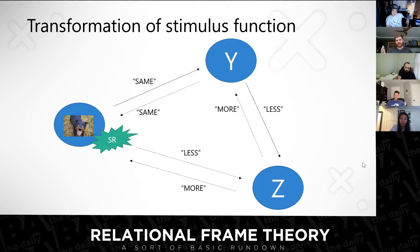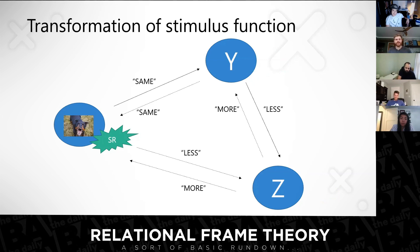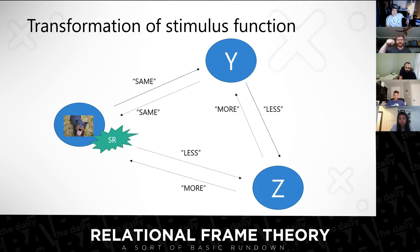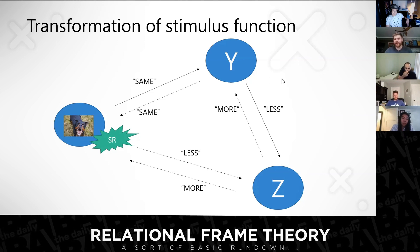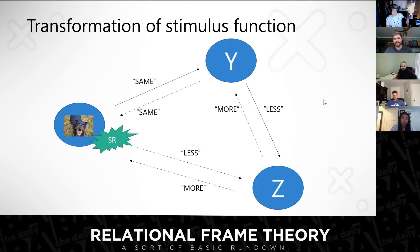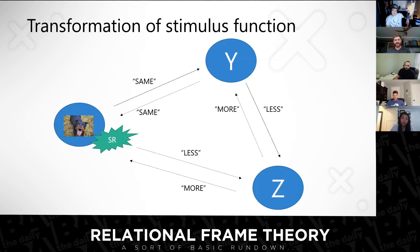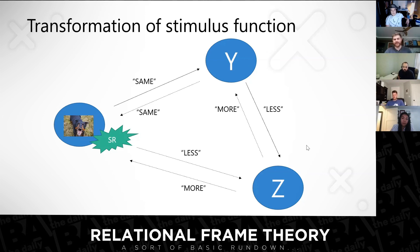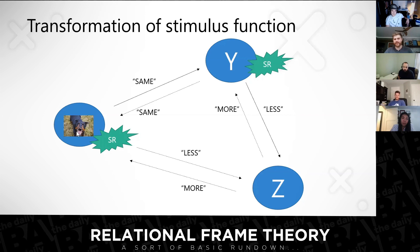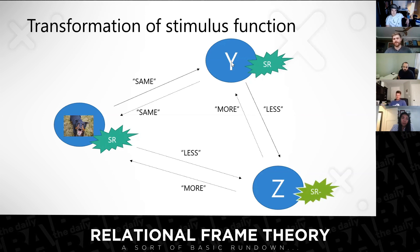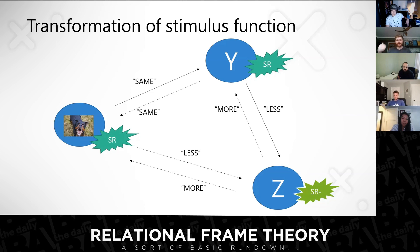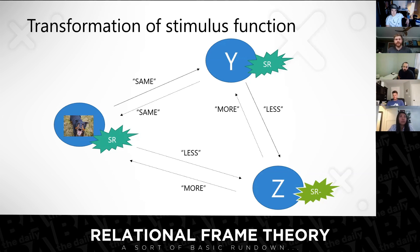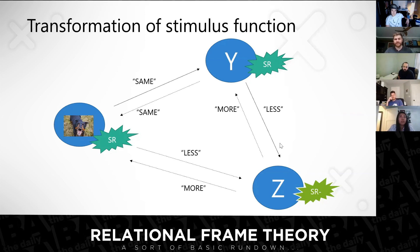We can also get a transformation of aversive or escape functions. Here's a big, loud, barking dog — his name is Henry. Y is the name Henry. If I tell you that Henry is less vicious than Frank, and we're going to my friend's house where Frank lives, now I'm freaking out. The aversive function of the dog transfers to the name Henry, and now I'm even more afraid of Frank because he's bigger and meaner than Henry. I don't actually have to ever meet Frank or be attacked by Frank — I know to avoid Frank because of this relational frame.